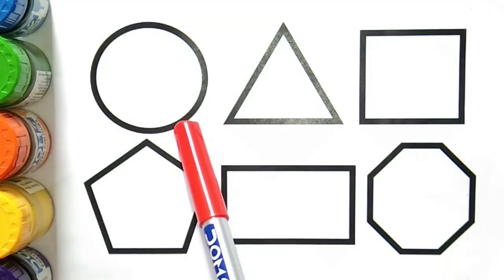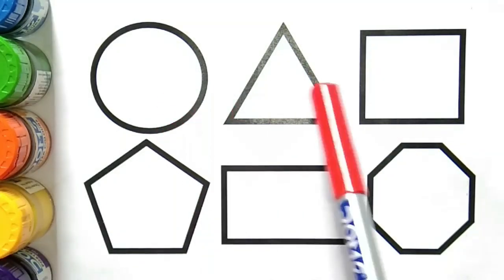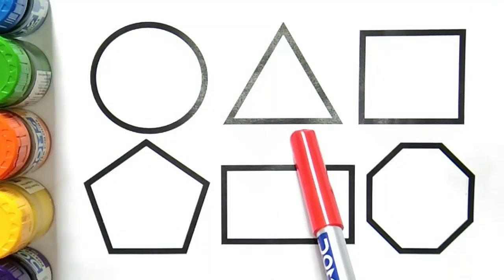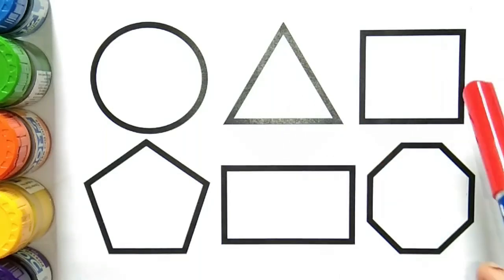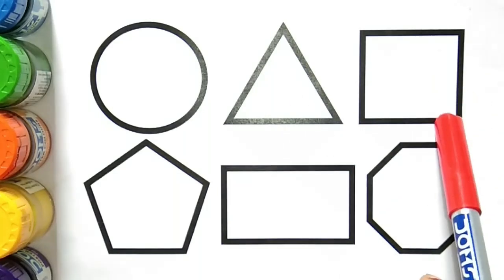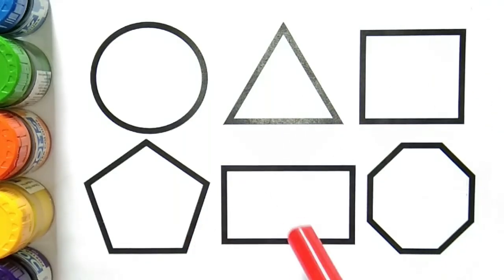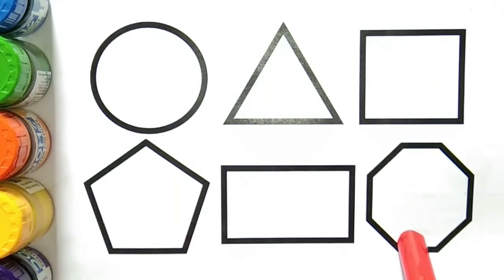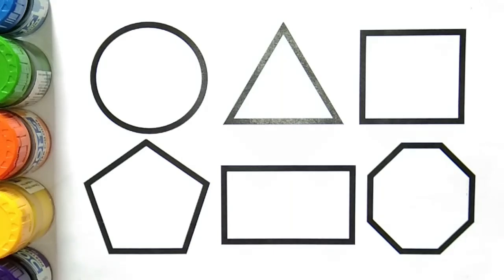Circle. Triangle. Square. Pentagon. Rectangle. Octagon. Let's draw some shapes with colors.